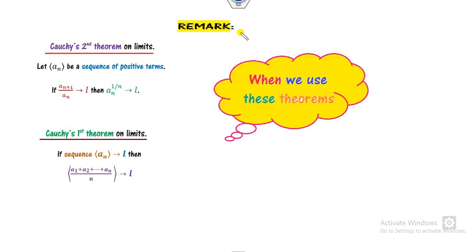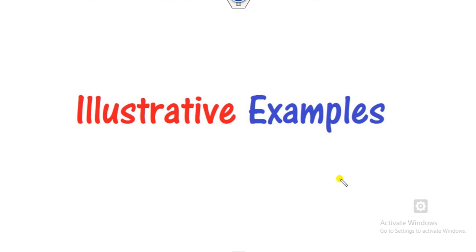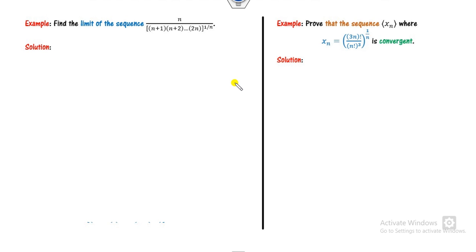Let us discuss some examples. In the last two lectures, we discussed Cauchy's first theorem and Cauchy's second theorem. The question is: when do you use which theorem? Whenever a problem involves a term raised to power 1 by N, use Cauchy's second theorem. Whenever a problem involves the form 1 by N (an arithmetic-type mean), use Cauchy's first theorem. For example, this expression is raised to power 1 by N, so we apply Cauchy's second theorem.